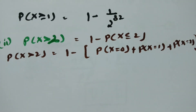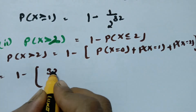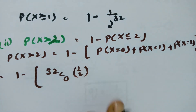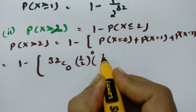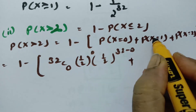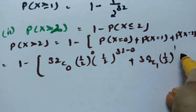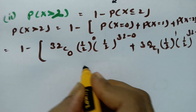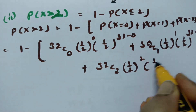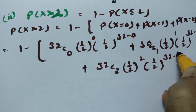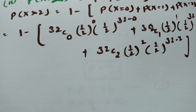Substituting all values: for x=0, this is 32C0 × (1/2)^0 × (1/2)^32; for x=1, this is 32C1 × (1/2)^1 × (1/2)^31; and for x=2, this is 32C2 × (1/2)^2 × (1/2)^30.